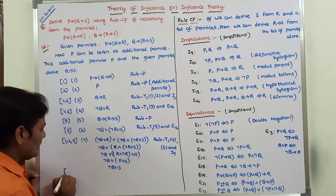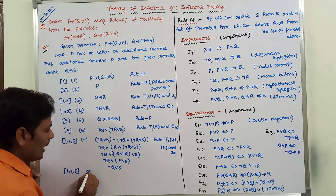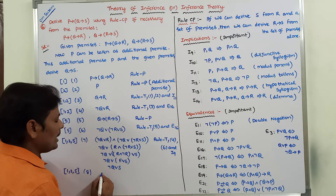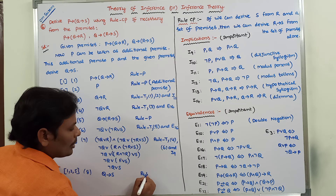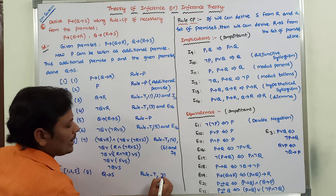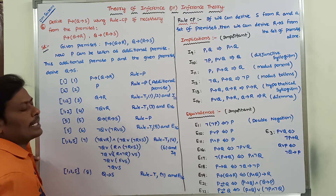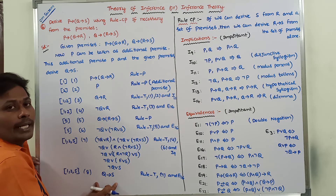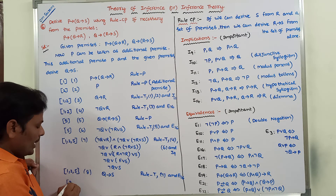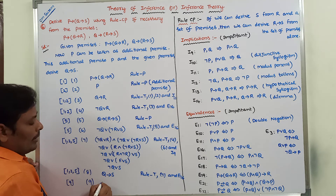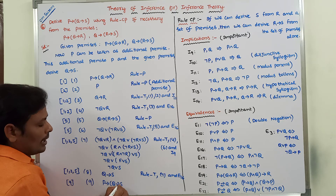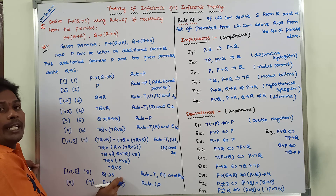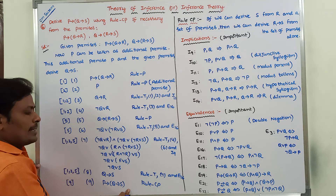So step 7 can be written as: according to rule E16, negation Q or S can be written as Q conditional S. So Q conditional S is written in the eighth step using rule T applied on the seventh step, with equivalence rule E16. We have now derived Q conditional S. In the final step, after step 8, we write the ninth step: P conditional Q conditional S using Rule CP.